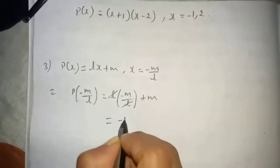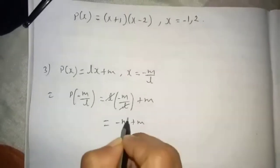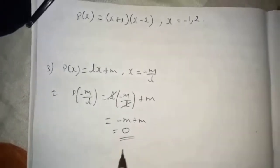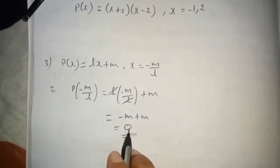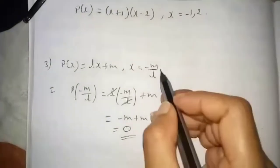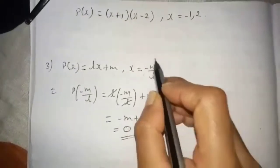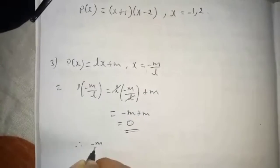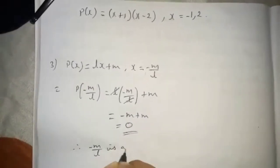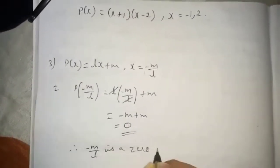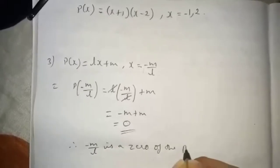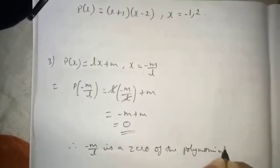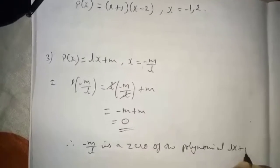So what will be remaining? Minus m plus m. Minus m plus m also cancel, becomes zero. So you got the last answer as zero. Therefore minus m by l is a zero of the polynomial lx plus m.